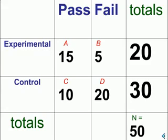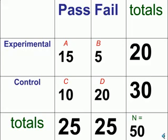Let us suppose that 15 out of 20 in the experimental group pass the test, but only 10 out of 30 in the control group pass the test. We can therefore see that 25 people total have passed and 25 have failed.